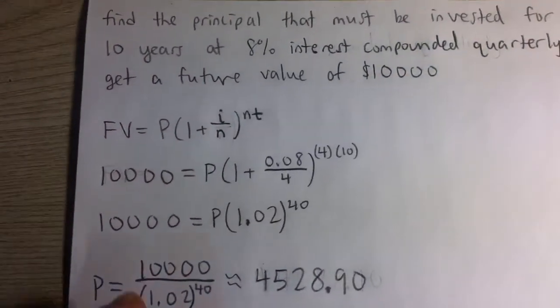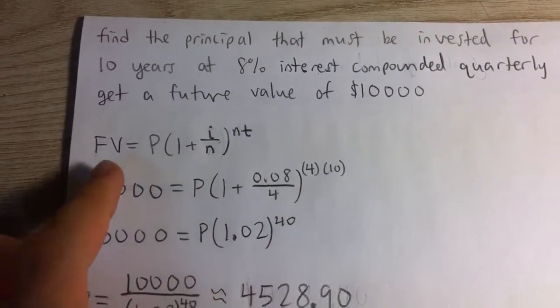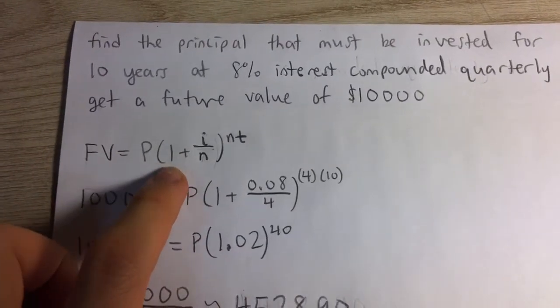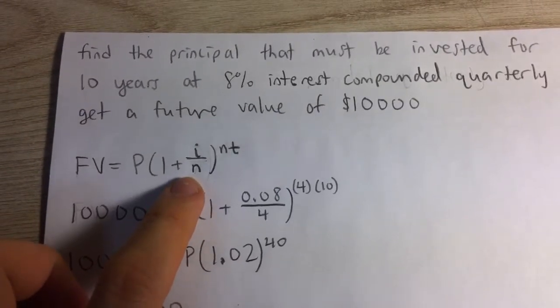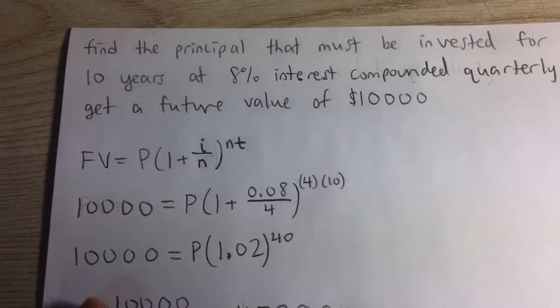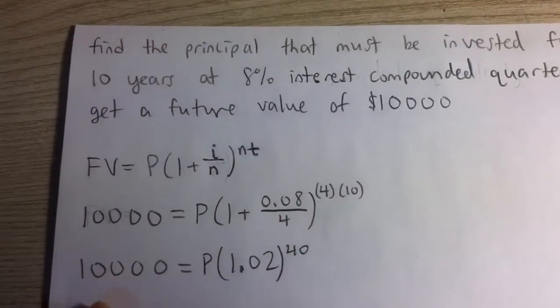So here's our compound interest formula, our future value formula. It says the future value is equal to the principal times one plus i, the interest rate per year, over n, the number of compounding periods per year, all raised to the nt power, where t is the time in years.